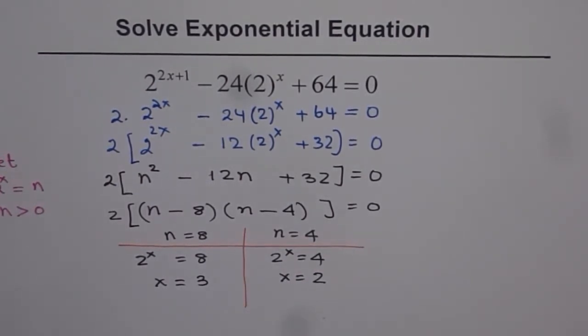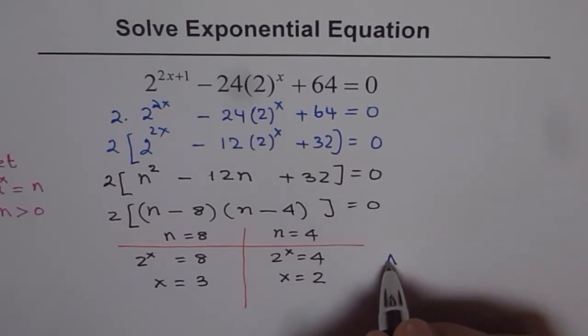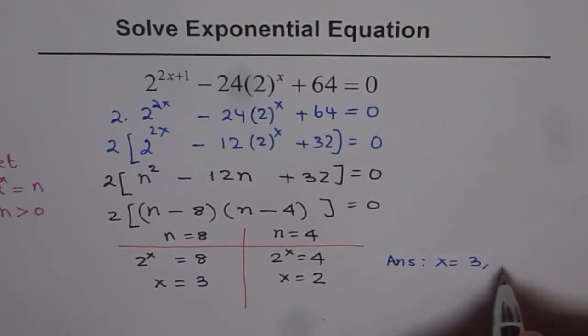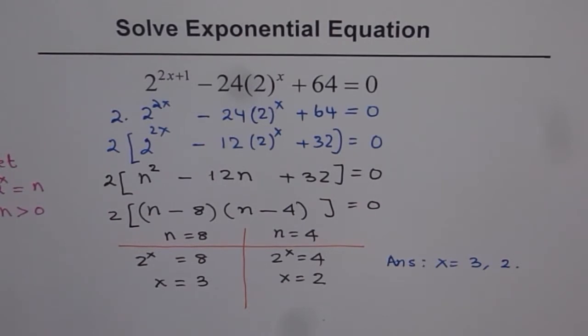So these two are the possible solutions for us. And therefore, we get our answer and the answer is x equals to 3 or x equals to 2. These are the two possible answers for the given equation.